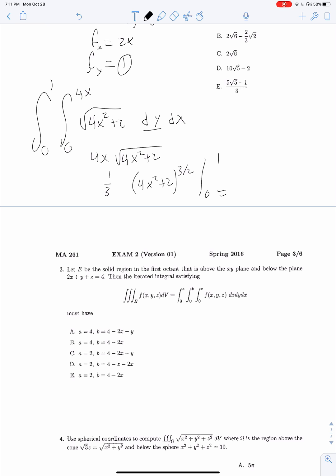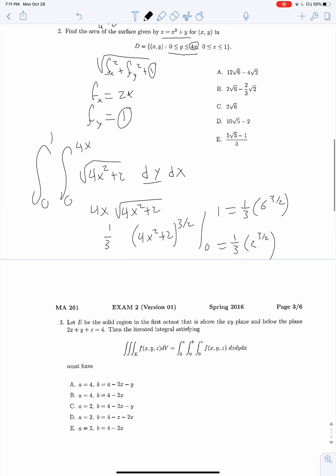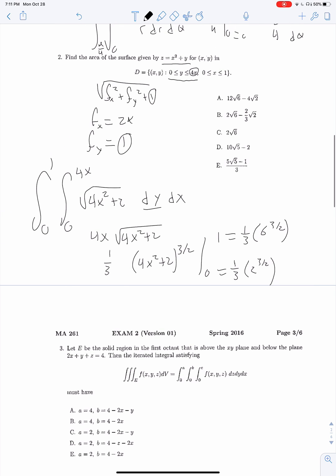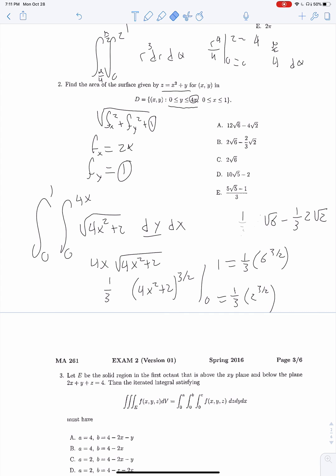Integrating with respect to x, we get 1 over 8 times 2 over 3 times 4x squared plus 2 to the 3 halves. This simplifies down to 1 over 3. Evaluating on 0 to 1: at 0 it's 1 third 2 to the 3 halves, at 1 it's 1 third 6 to the 3 halves. Canceling out, we get 2 root 6 minus 2 thirds root 2.